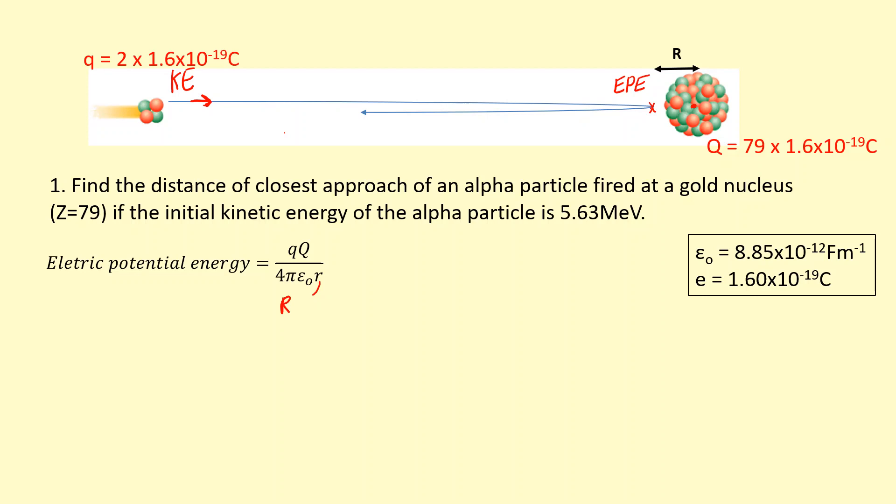So first I'm going to turn the megaelectron volts into joules. So just simply times it by 10 to the 6th to get rid of the mega, and then times it by e, the charge of an electron, to turn it into joules. So I've got the joules right there.